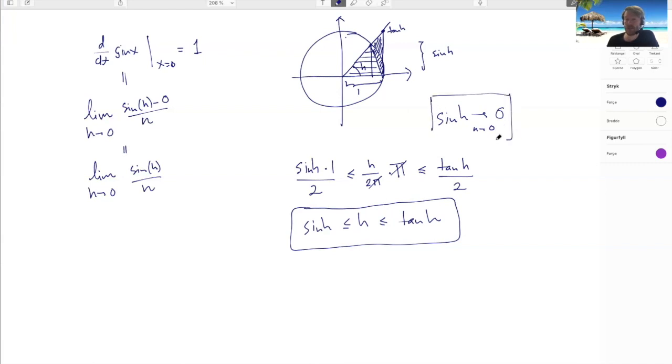But I can deduce now that this tends to zero, which in particular means that the sin is continuous at zero. And then I can use this in a slightly more clever way to be able to do a squeeze theorem proving that this guy here tends to one. And once I have this, then I have the derivative of the sine function at x is equal to zero.